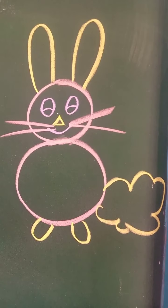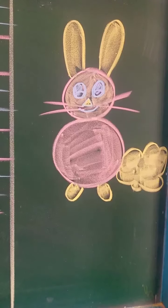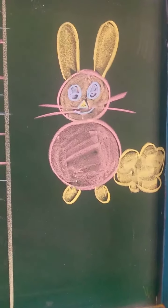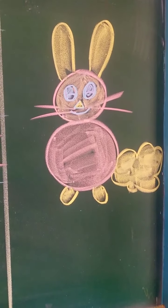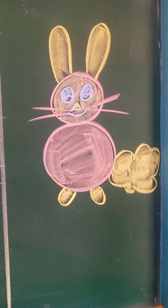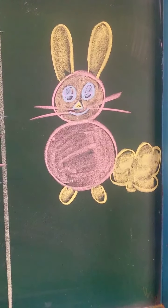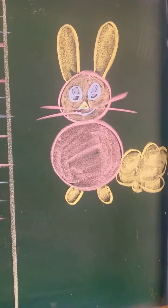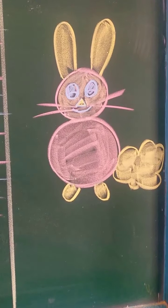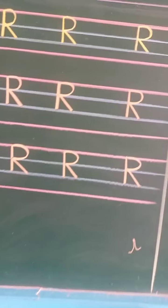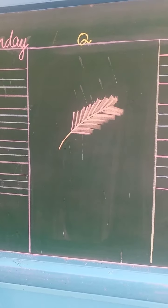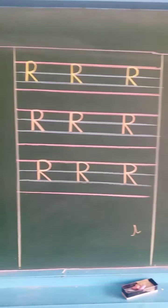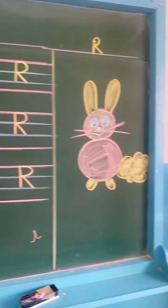Now do the coloring in the rabbit. So like this, my dear students, you will do the coloring in the rabbit. Do the dark and neat coloring in the rabbit. You can do pink color, yellow color, any of your favorite color in the rabbit. So like this, my dear students, do the page of the letter Q and draw the picture of Q, and do letter R and draw the picture of R.